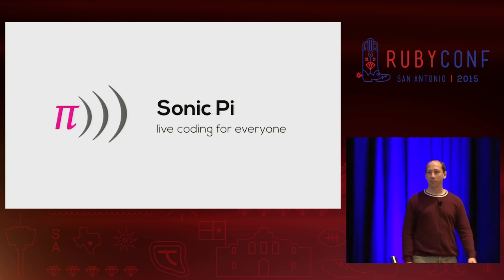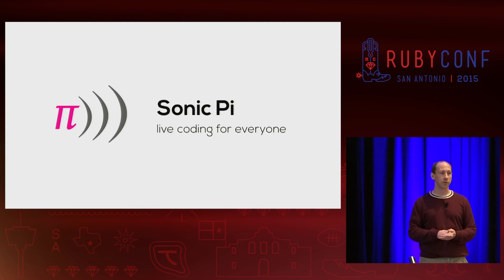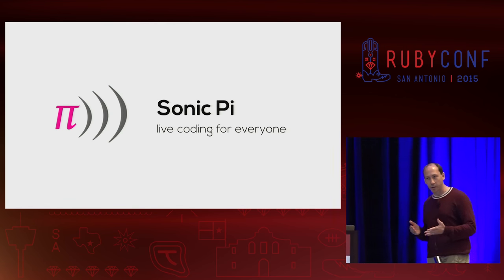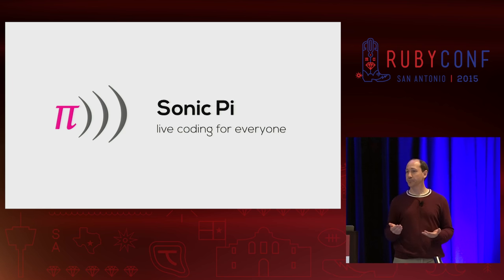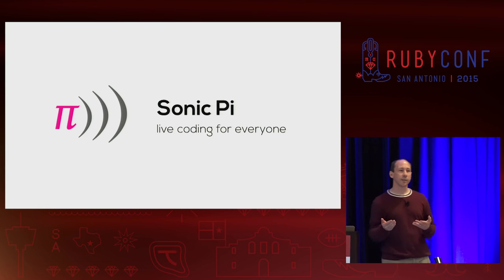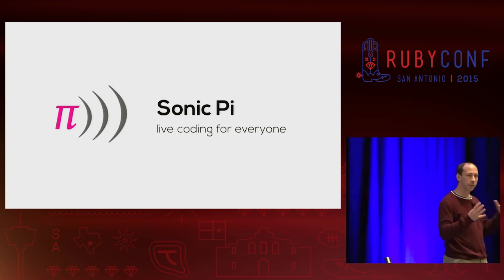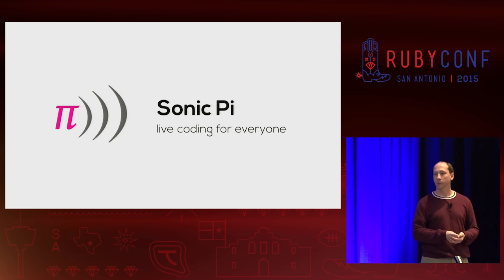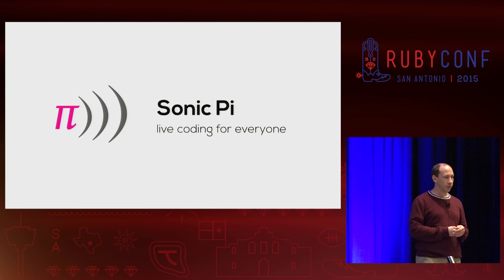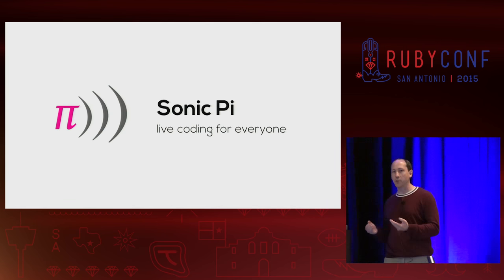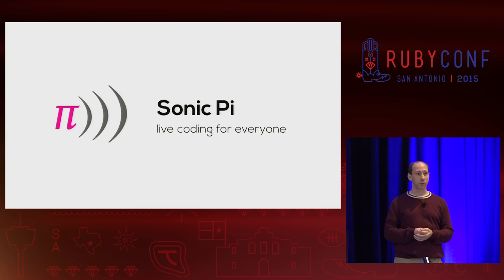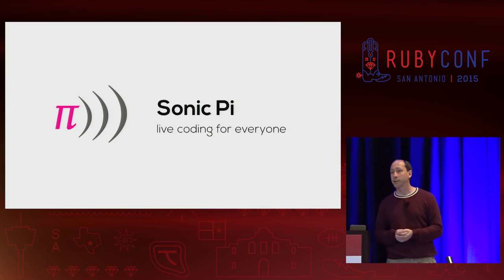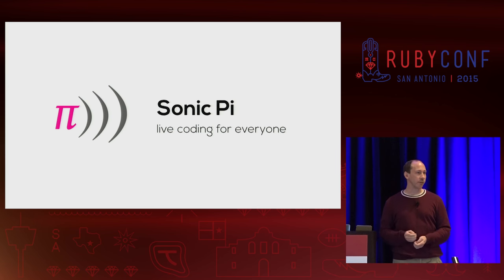Sonic Pi was created by Sam Aaron, a programmer working in the UK. One of his primary motivations was to give people a creative experience with code. A lot of times people think of code as just something for serious business applications or big government databases or sharing pictures of food on the internet. But for Sam, code could be a vehicle for self-expression and creativity — including for people who had never coded before.